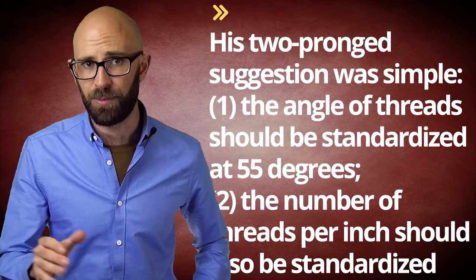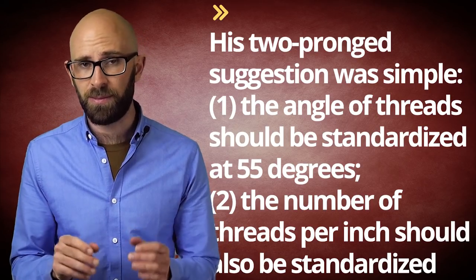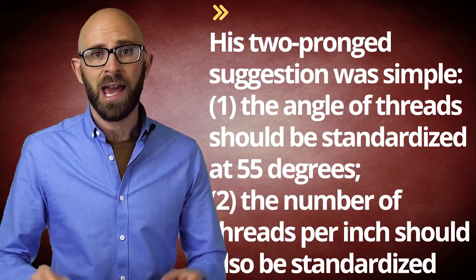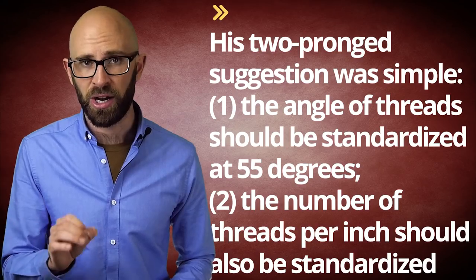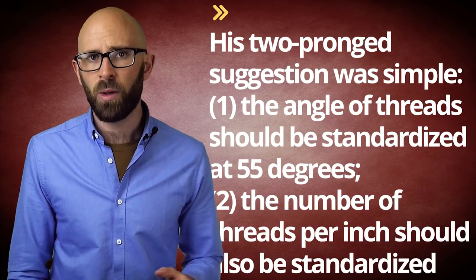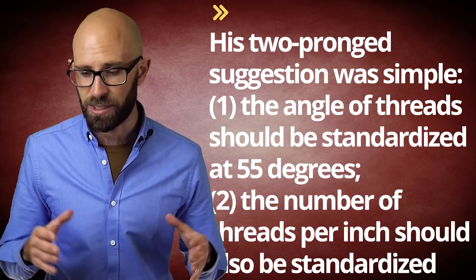His two-pronged suggestion was simple: one, the angle of the threads should be standardized at 55 degrees, and two, the number of threads per inch should also be standardized, although they would vary depending on the diameter of the screw.